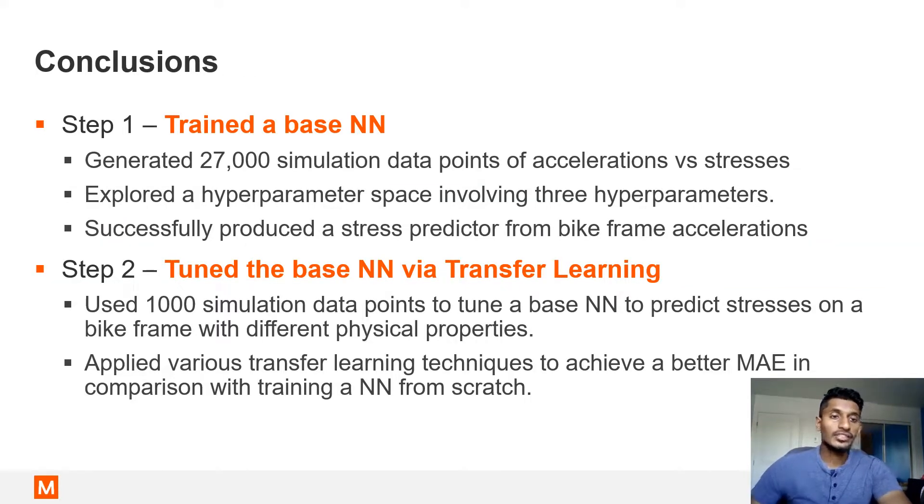To conclude, in step one, we trained a base neural network. We generated 27,000 simulation data points of accelerations versus stresses. We explored a hyperparameter space involving three hyperparameters, and we successfully produced a stress predictor from bike frame accelerations. In step two, we tuned the base neural network via transfer learning. We used 1,000 simulation data points to tune a base neural network to predict stresses on a bike frame with different physical properties. We applied various transfer learning techniques to achieve a better mean absolute error in comparison with training a neural network from scratch.